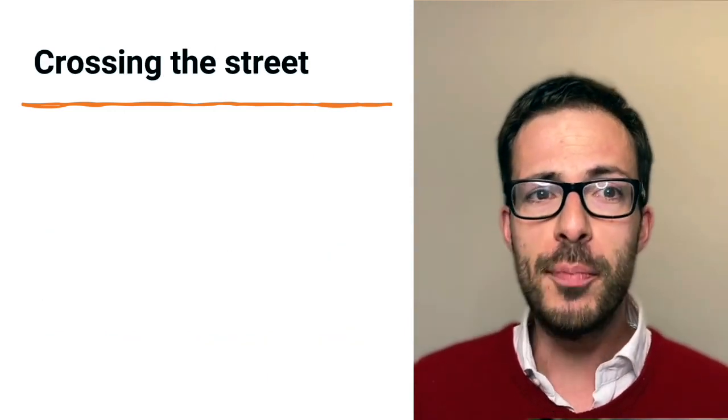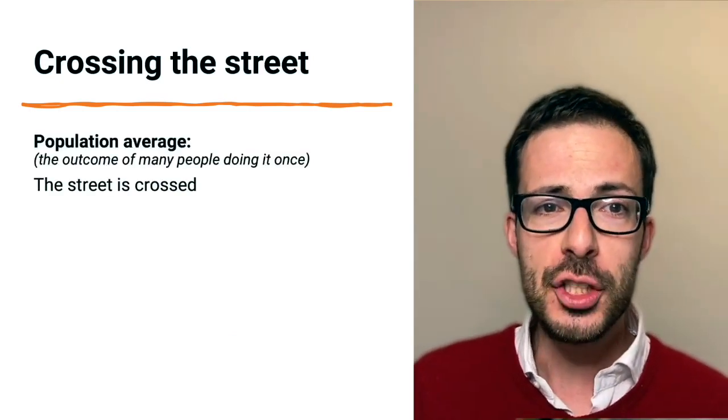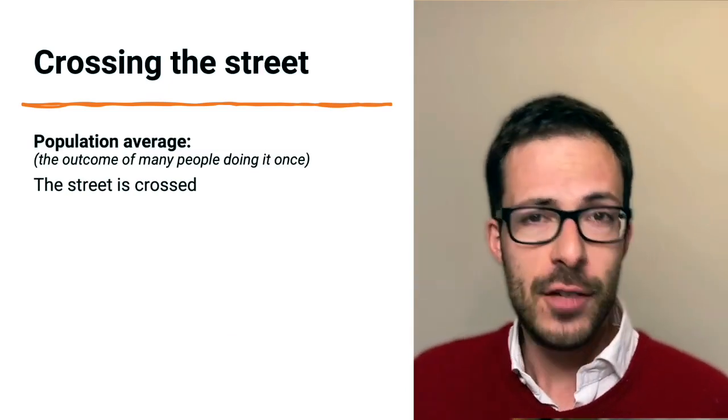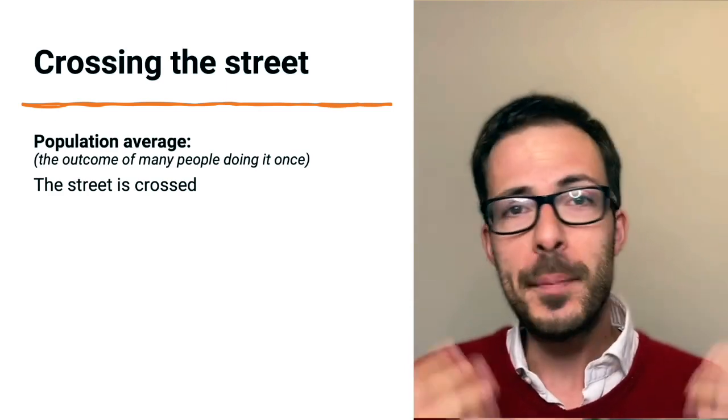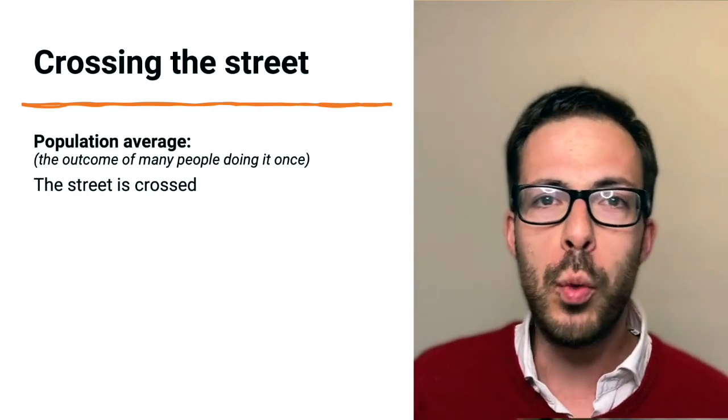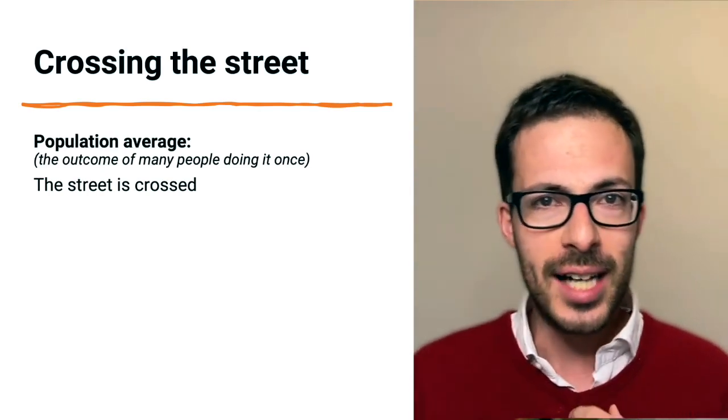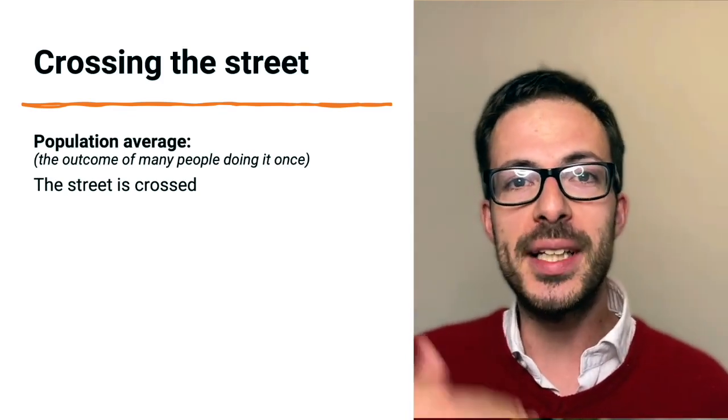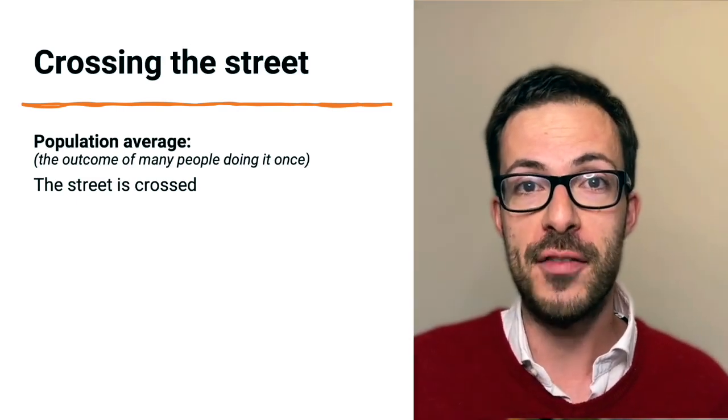Now let's move back to crossing the street, and let's apply the same reasoning. The population average of crossing the street is that the street is crossed. If we take a million people crossing the street once, what happens is that almost everyone will manage to cross the street. Of course there will be one or two people, maybe, which will be involved in an incident with a car, but for most of the people, the outcome will be that the street is crossed.